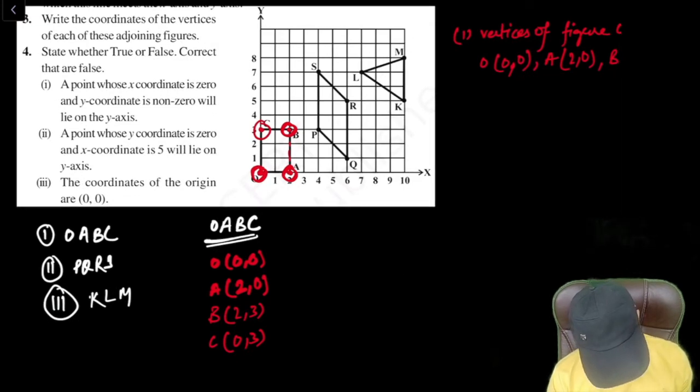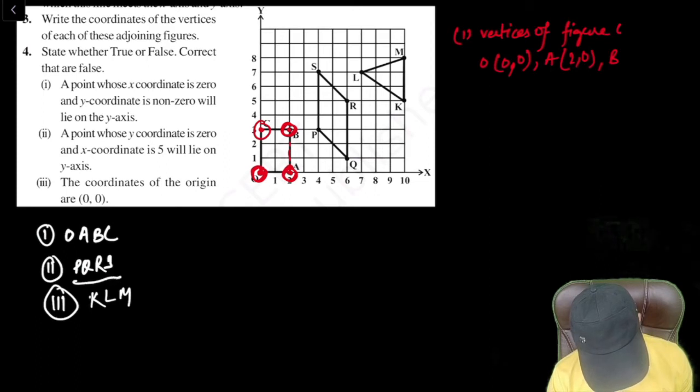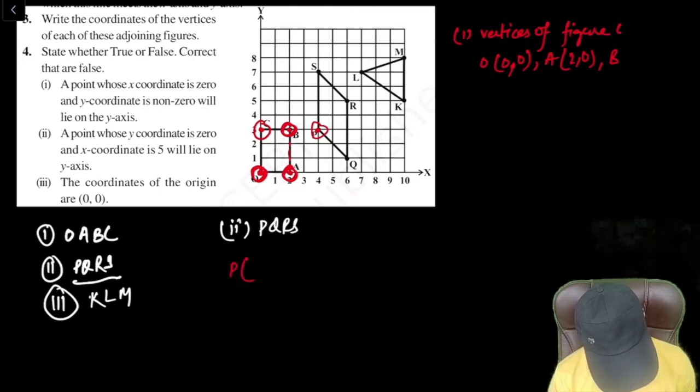Now let's solve second one. What is our second point? Second point is PQRS. So let's solve PQRS. P point over here, so P point vertex are 4, 3.